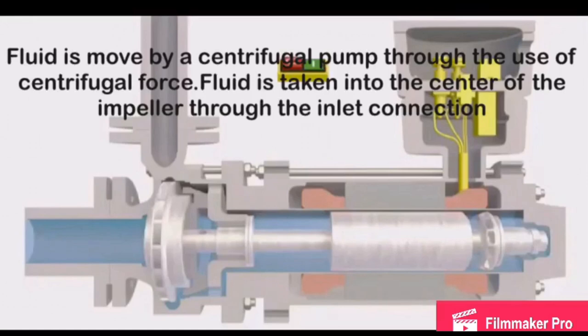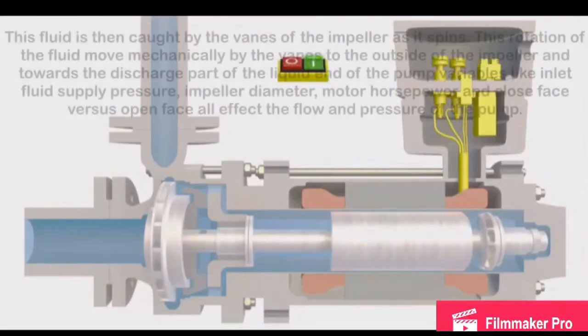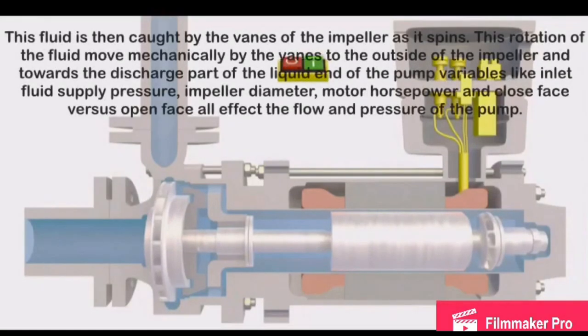For the working principle of canned motor pump, the fluid is moved by a centrifugal pump through the use of centrifugal force. Fluid is taken into the center of the impeller through the inlet connection. This fluid is then caught by the vanes of the impeller as it spins. This rotation of the fluid is moved mechanically by the vanes to the outside of the impeller and towards the discharge part of the liquid end of the pump.